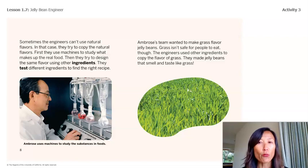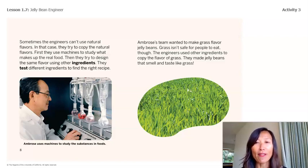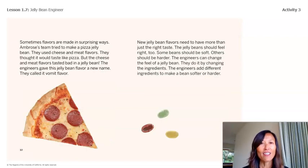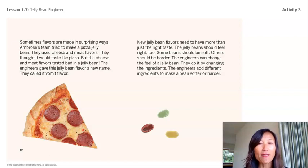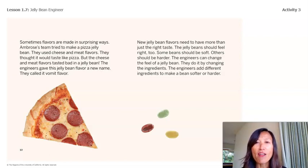They test different ingredients to find the right recipe. Ambrose's team wanted to make grass-flavor jelly beans, but grass isn't safe for people to eat, so the engineers used other ingredients to copy the flavor of grass — making jelly beans that smell and taste like grass. Sometimes flavors are made in surprising ways. Ambrose's team tried to make a pizza jelly bean using cheese and meat flavors, but it tasted bad. The engineers gave it a new name: vomit flavor. New jelly bean flavors need to have more than just the right taste — they should feel right too.